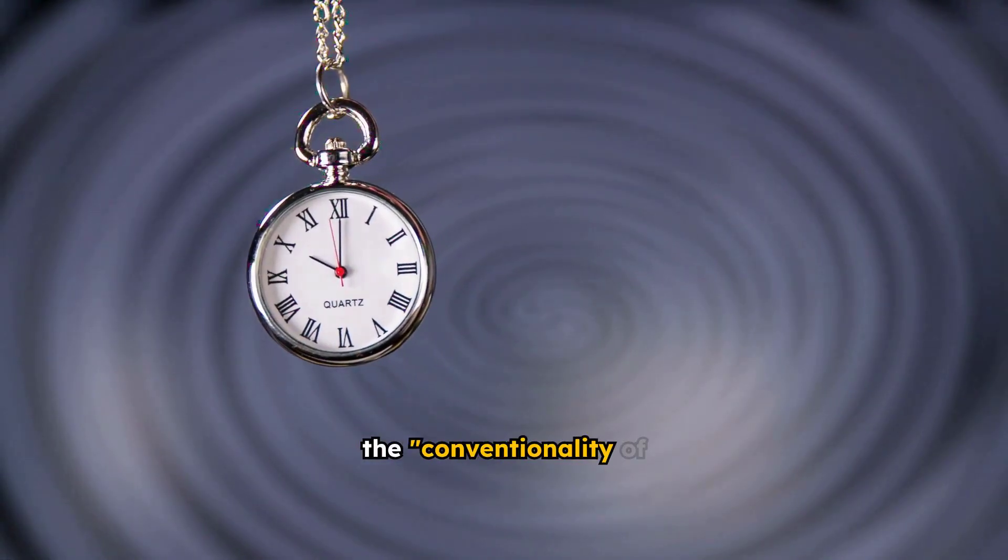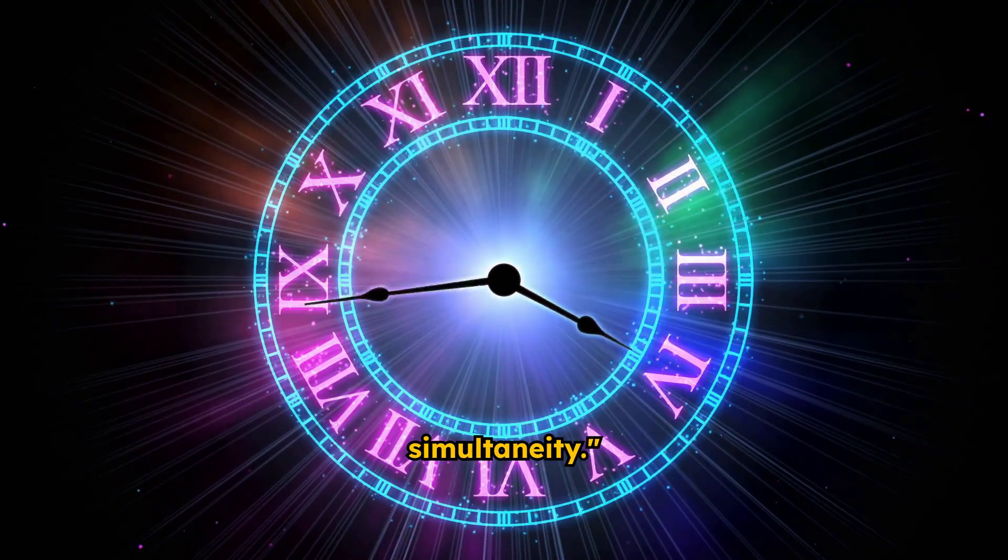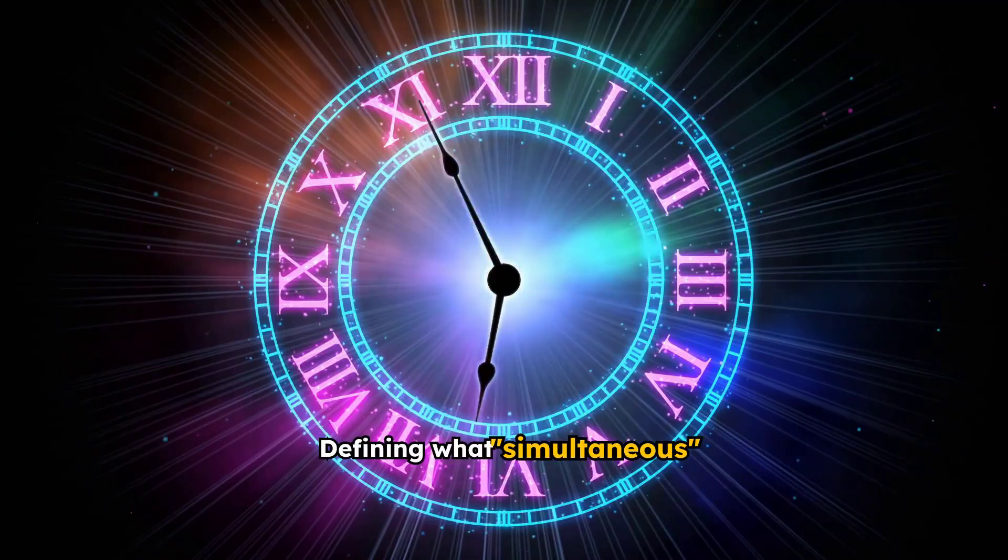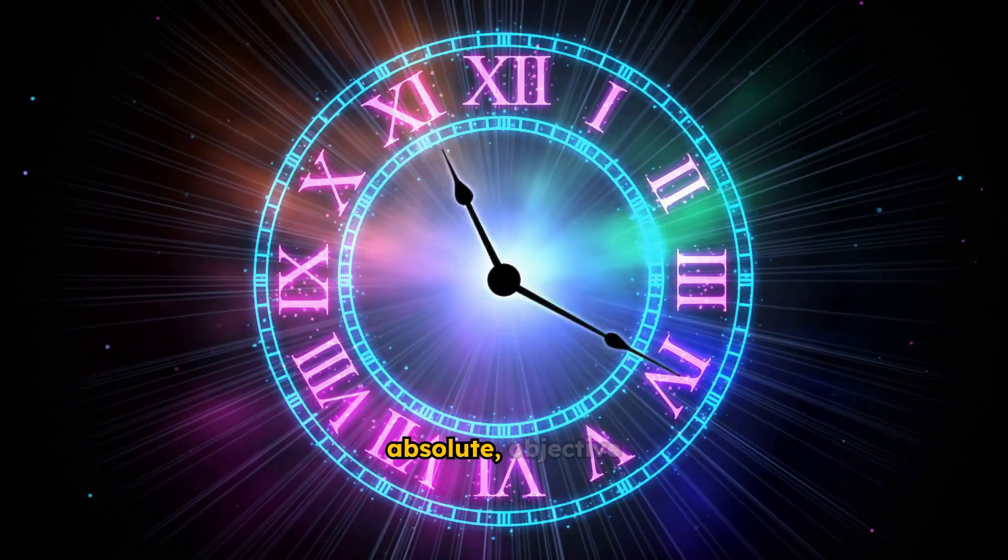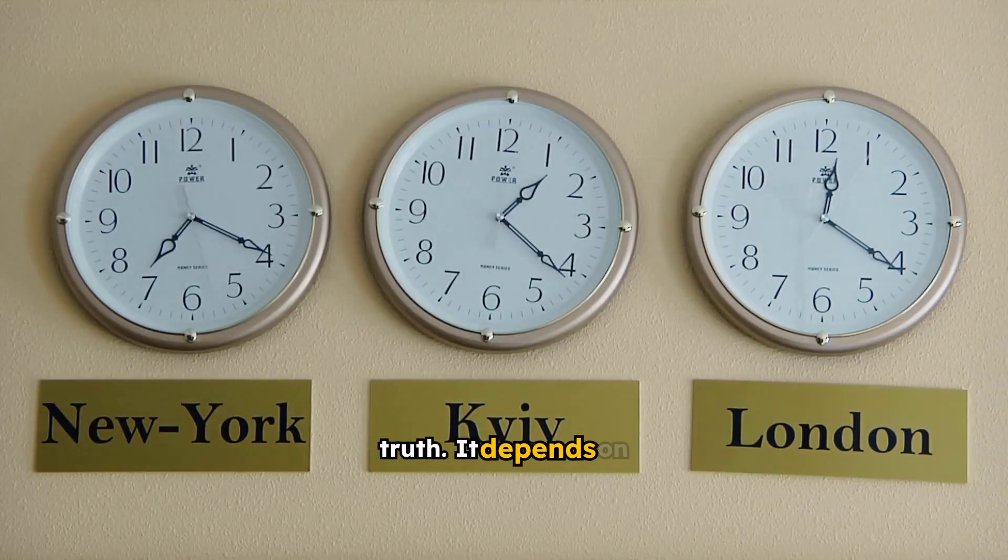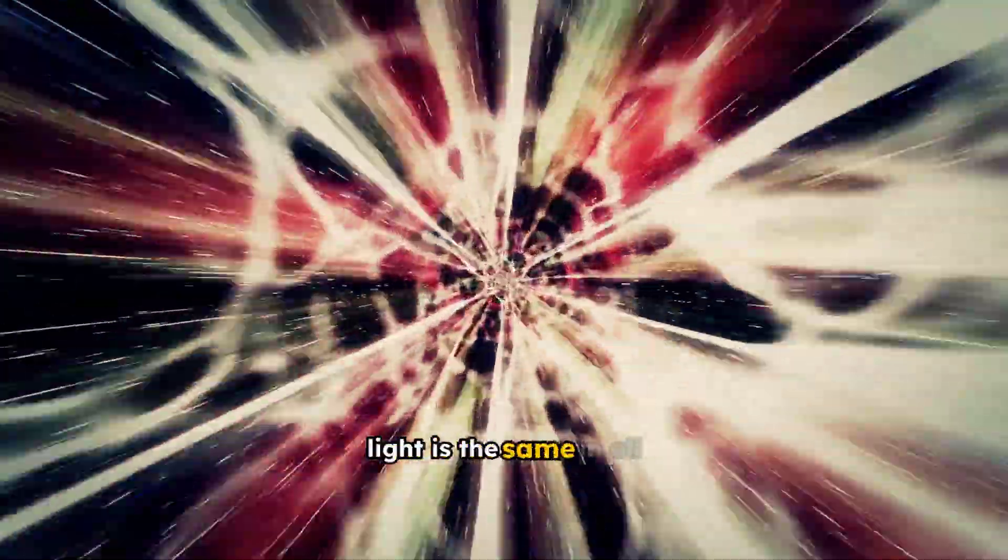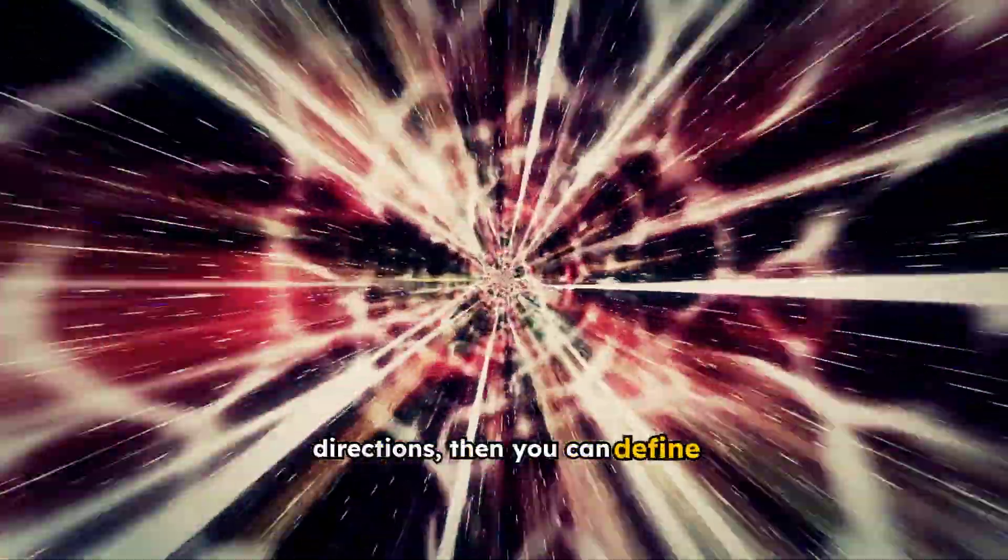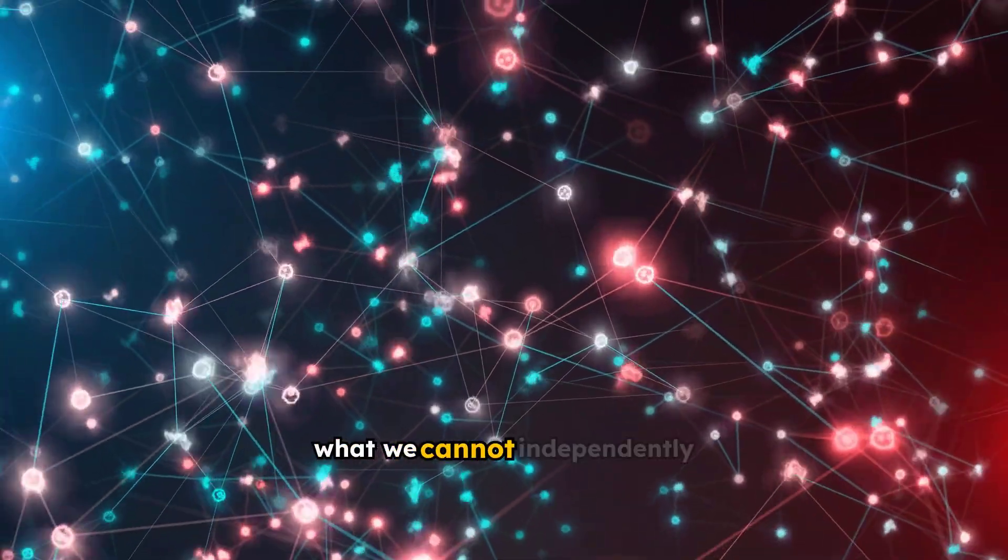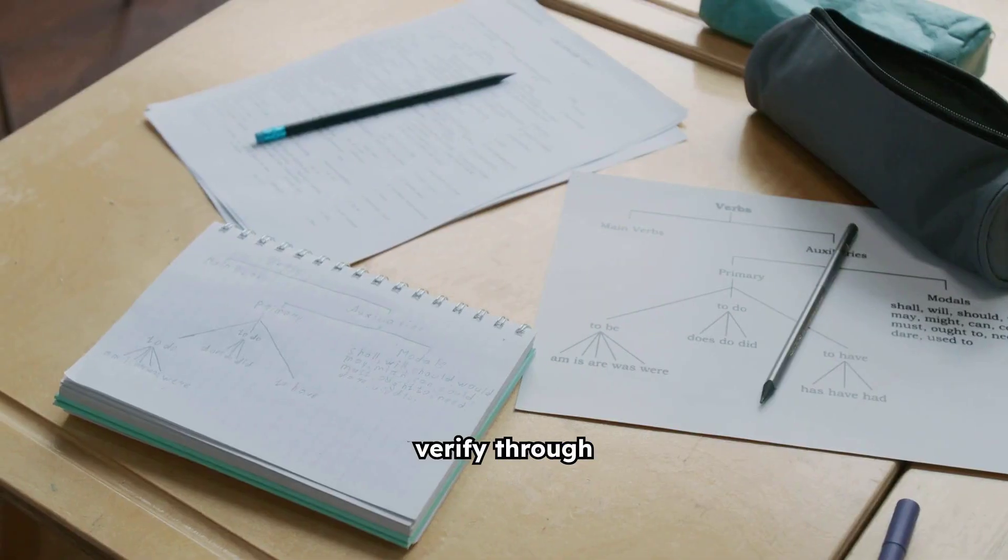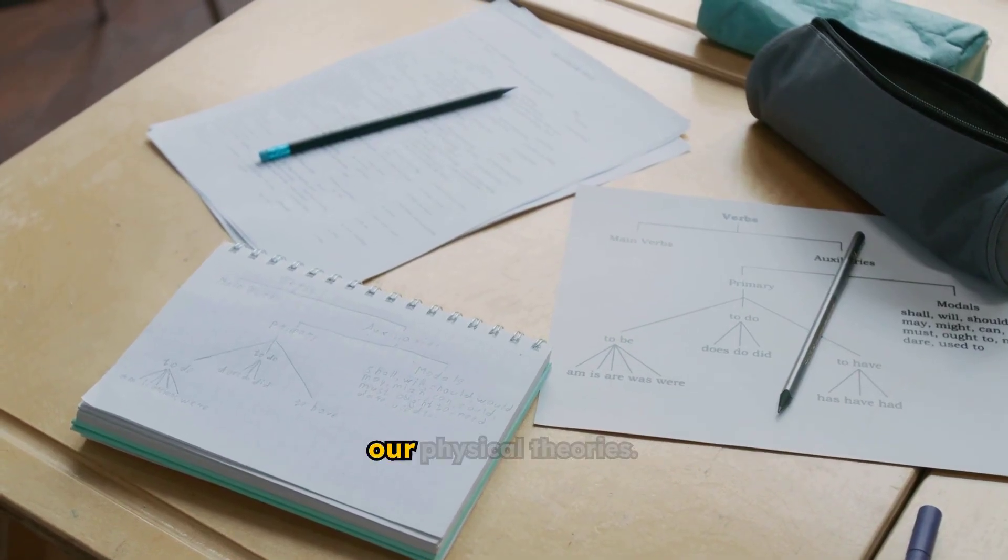This concept is known as the conventionality of simultaneity. Defining what simultaneous means for events happening at different locations is not an absolute objective truth. It depends on how you choose to synchronize your clocks. If you assume the one-way speed of light is the same in all directions, then you can define simultaneity. But this assumption is precisely what we cannot independently verify through measurement. It's a choice we make to build our physical theories.